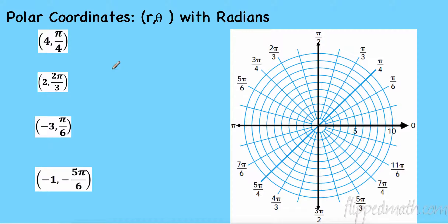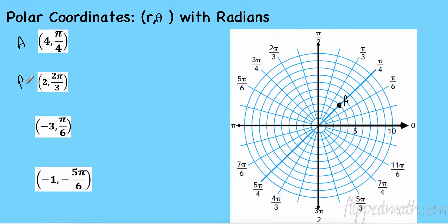Let's do some polar coordinates with radians. We have our circle with different radius lengths labeled 1 through 5, and some key radian values. Let's do the first one: a radius of 4 and pi over 4. Pi over 4 is right here, so I start at zero, go to pi over 4, and go out 4 — that's 1, 2, 3, 4. We'll label that point A: (4, pi/4).